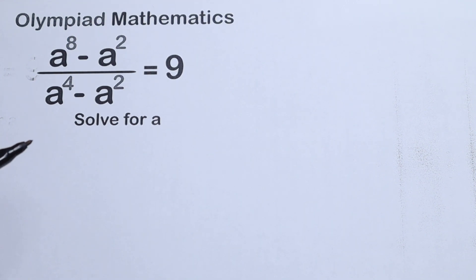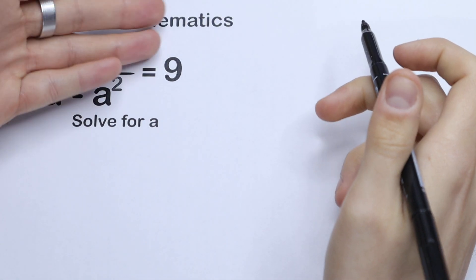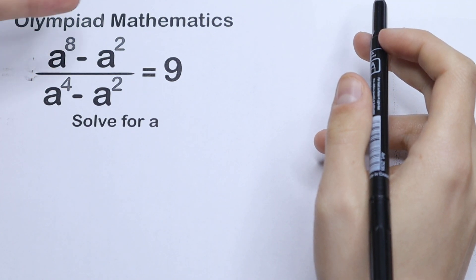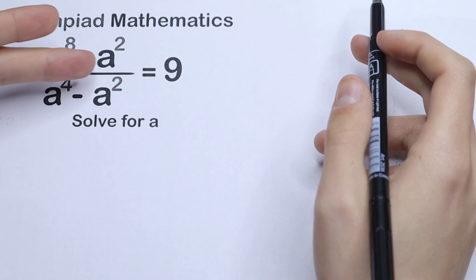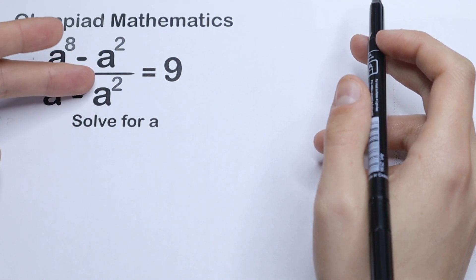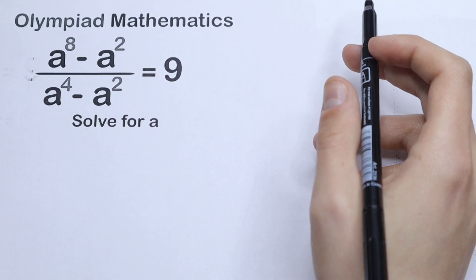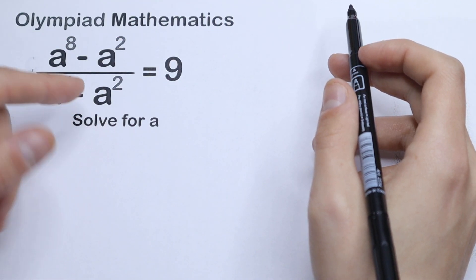Hello everyone, welcome back to MathMoo. Today we have an interesting Olympiad mathematics problem. We have a to the eighth power minus a squared, all over a to the fourth power minus a squared, equal to 9. And we need to find a.